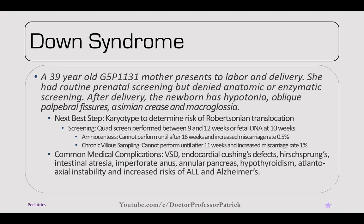Some common medical complications of Down syndrome: VSDs are still the most common type of congenital cardiac anomaly. There's a highly increased risk of endocardial cushion defect, increased risk of Hirschsprung's disease, intestinal atresias, imperforate anus, annular pancreas, hypothyroidism, atlantoaxial instability, and increased risk of ALL after age five and Alzheimer's disease due to the extra chromosome 21.